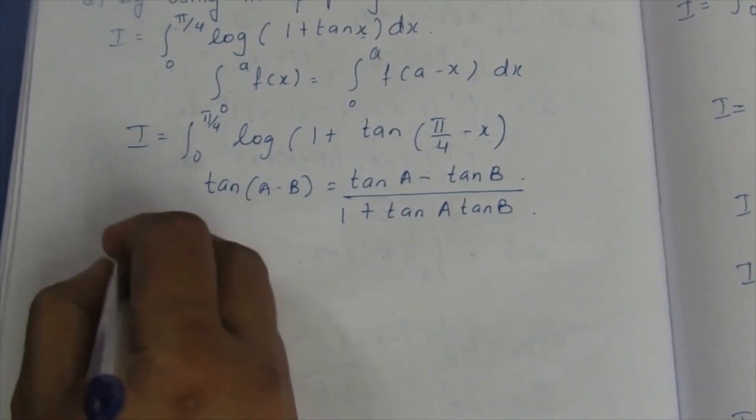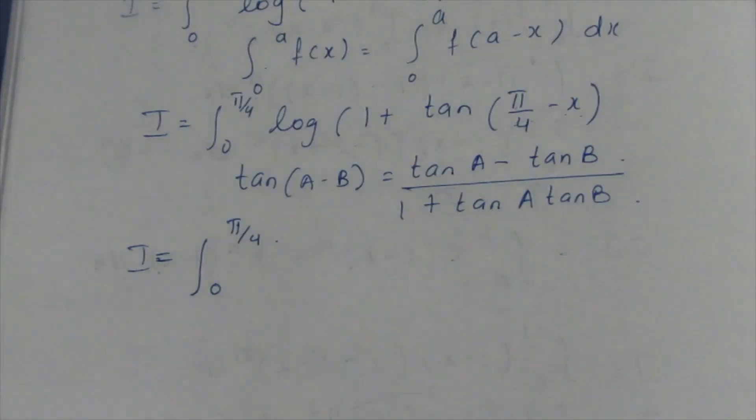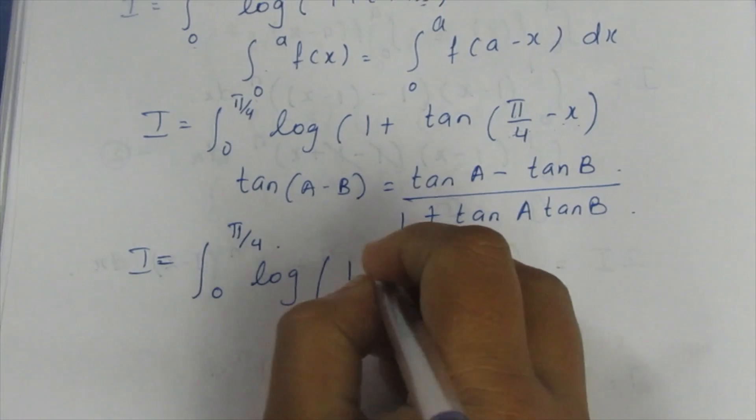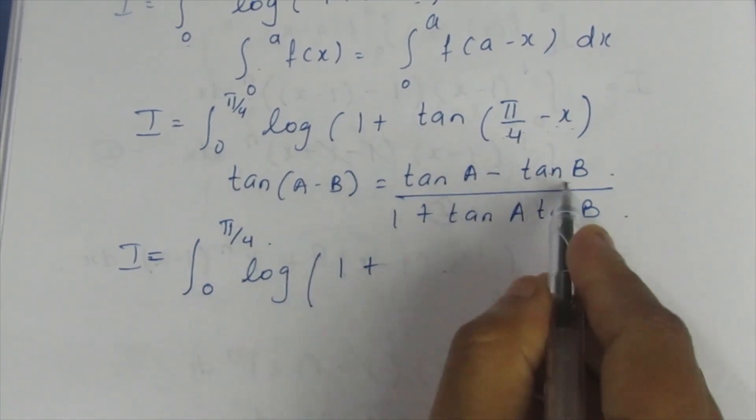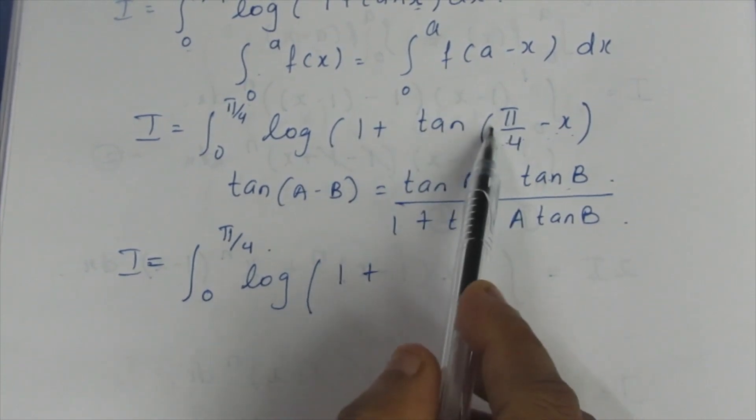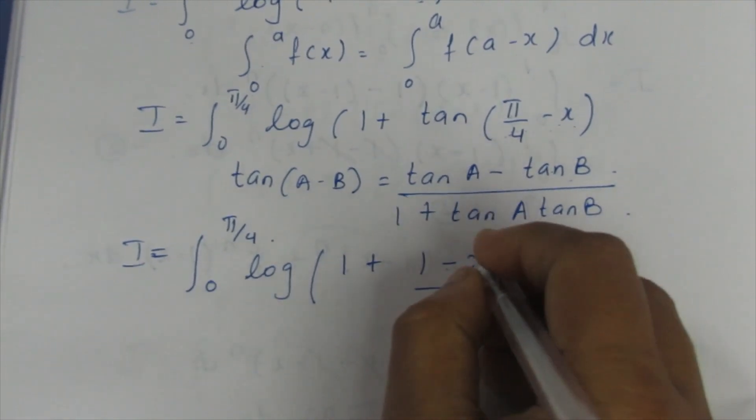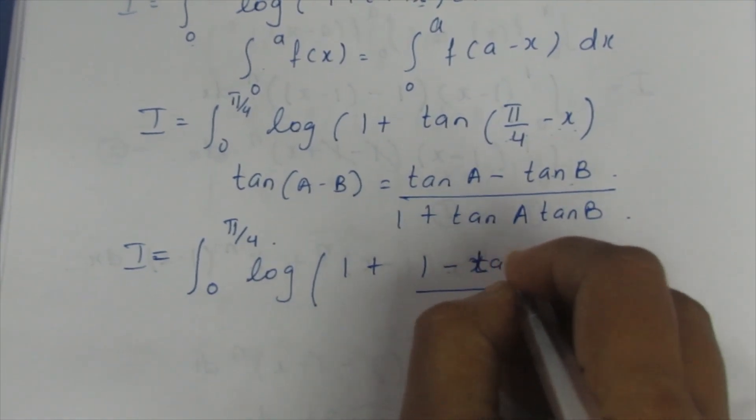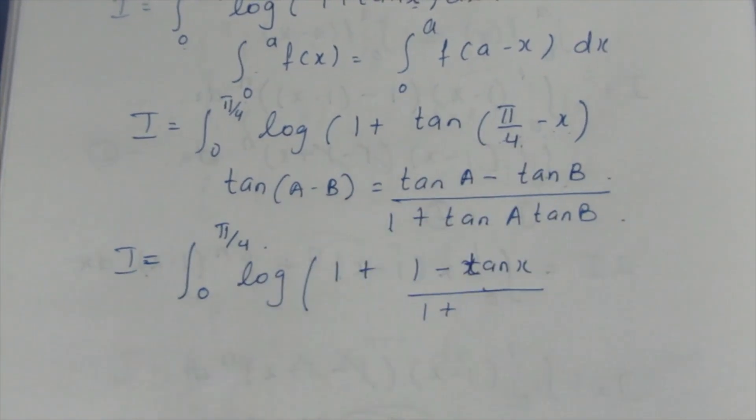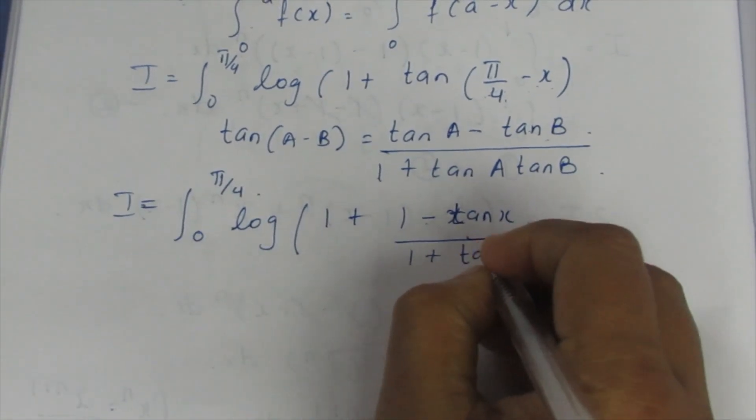I is equal to integration 0 to π/4 log(1 + (tan a tan b)). Here tan a is tan π/4. Tan π/4, we know it is 1. I can directly substitute this to be (1 - tan x)/(1 + tan x), because tan a is tan 45. Tan 45 is 1, so I am directly substituting the value, it becomes tan x.